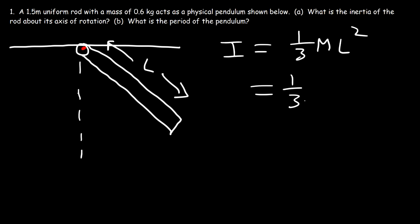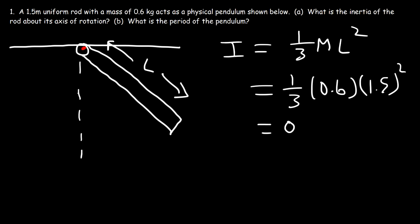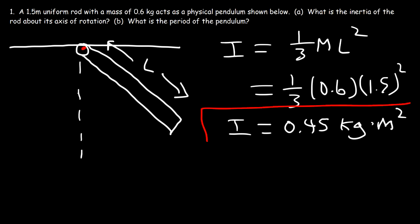So that's 1/3 times the mass which is 0.6 kilograms and the length is 1.5 meters. So 1.5 squared times 0.6 divided by 3 — that gives us an inertia of 0.45 kilogram·square meters. That's the solution to Part A.